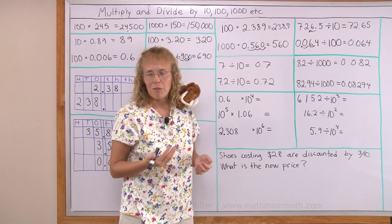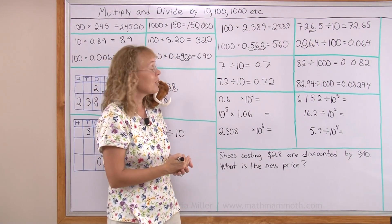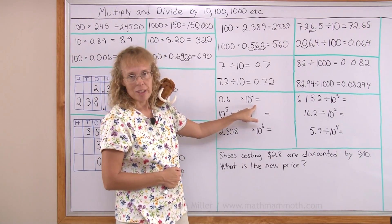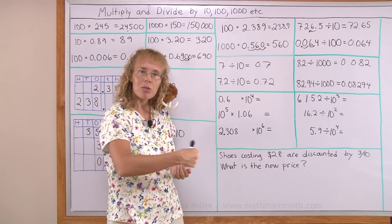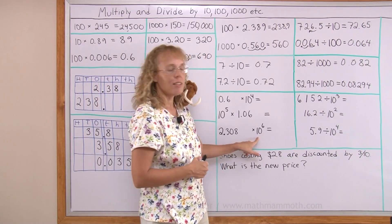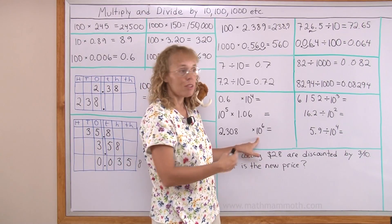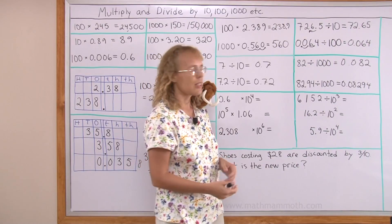Now we will solve a few more problems where instead of 10, 100, 1000 or so on, I have expressed it with an exponent. Remember 10 to the fourth power means 1 followed by 4 zeros. It's 10,000. This one is 1 followed by six zeros or a million. But the principle is the same. We just move the decimal point.